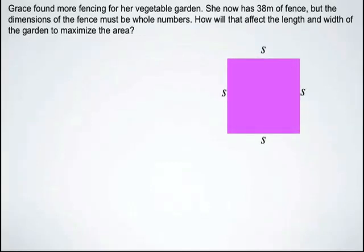So again, here's our situation. We've got a square, because it has to be as close to a square as possible to get a maximum area, and we're given that she has 38 meters of fencing for her garden. So we're required to find out what the width and the length is in order to maximize her garden.